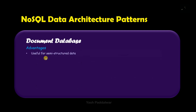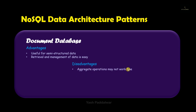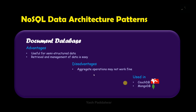Now let's see the advantages. The first advantage is that it is useful for semi-structured data, and using this document database the retrieval and management becomes very easy. Now the disadvantage is that because the data is stored in the form of semi-structured data, aggregate operations may not work well or may take a lot of time to accurately perform. The concept of document database is widely used in databases such as CouchDB and MongoDB — you might have heard of MongoDB, it is very popular.